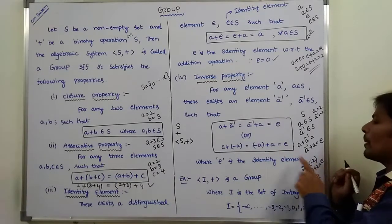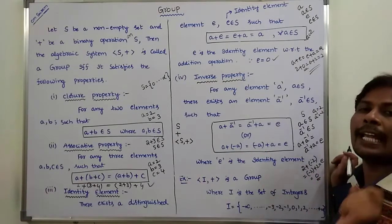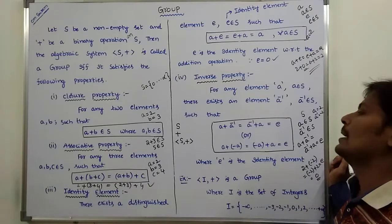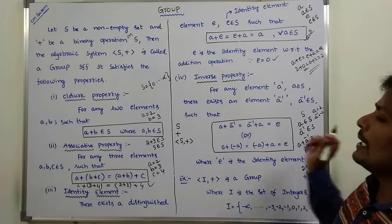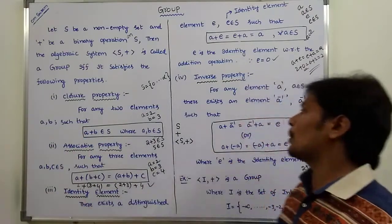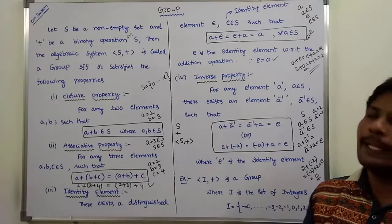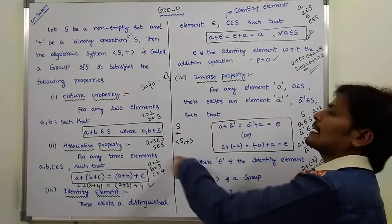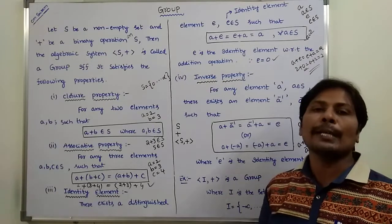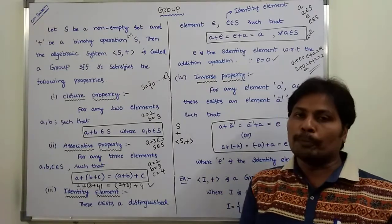Note that if the operation is multiplication, then the identity element E = 1. These are the four properties: closure property, associative property, identity element property, and inverse property. Whenever an algebraic system satisfies these four properties, it is called a group.